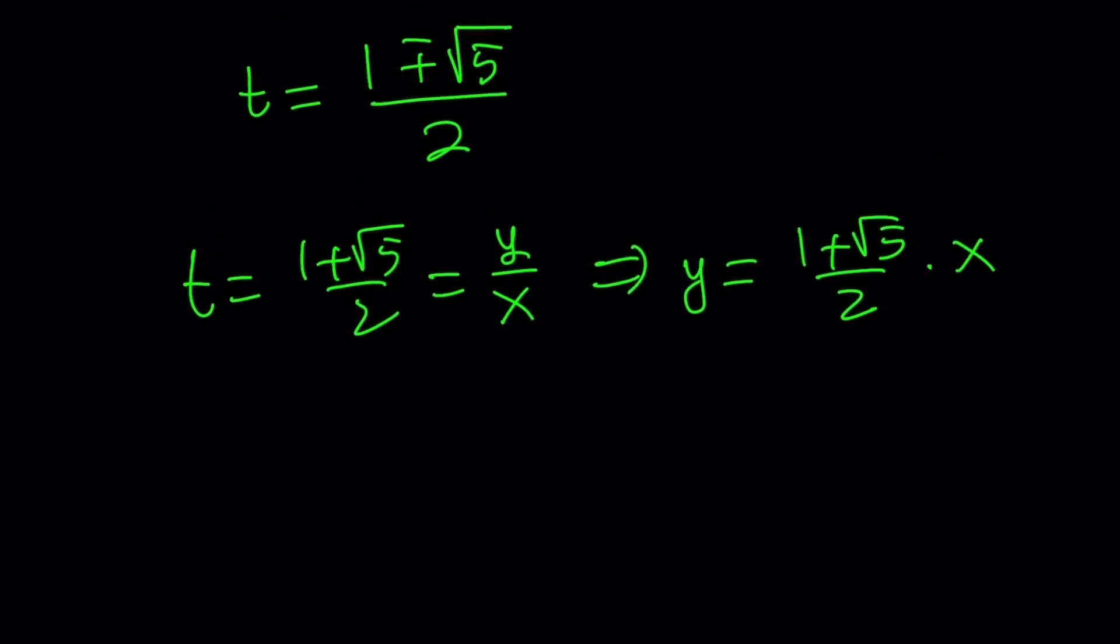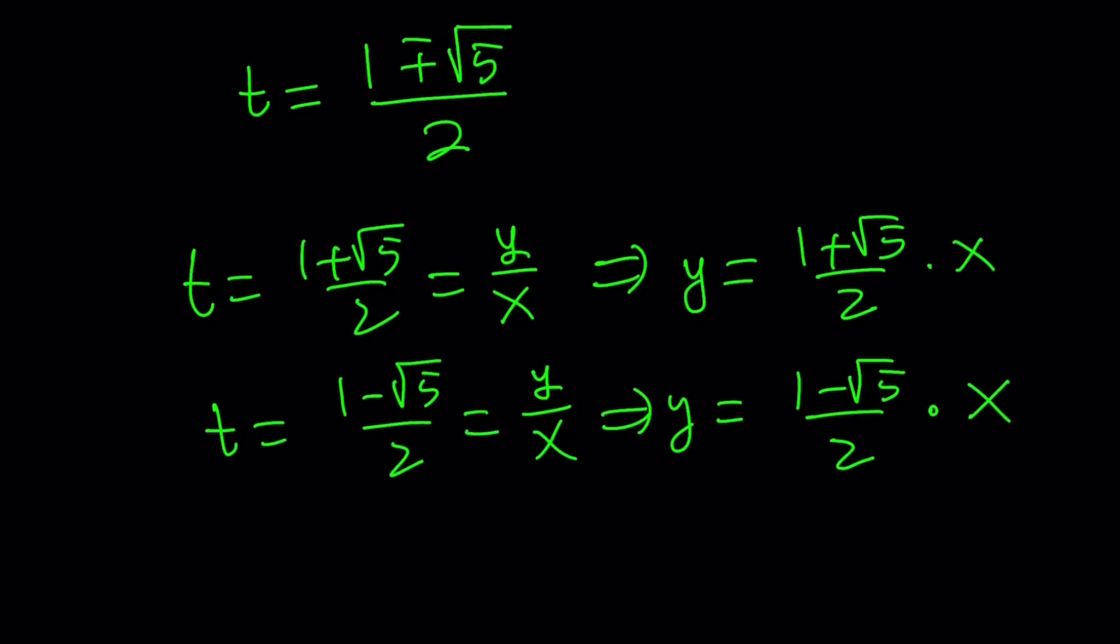And then we could also write this as 1 minus root 5 over 2. And then that is going to give us y over x again. And y becomes 1 minus root 5 over 2 multiply by x. And then we can go ahead and take a look at the graph now.